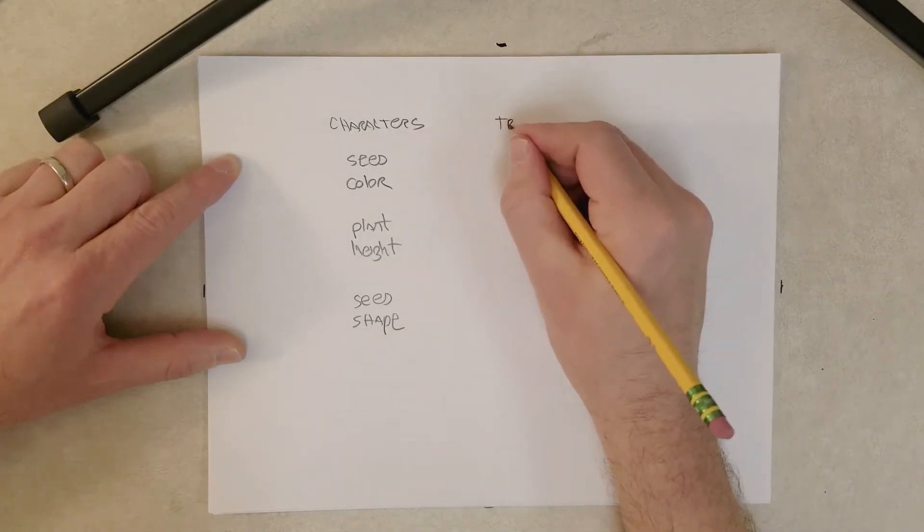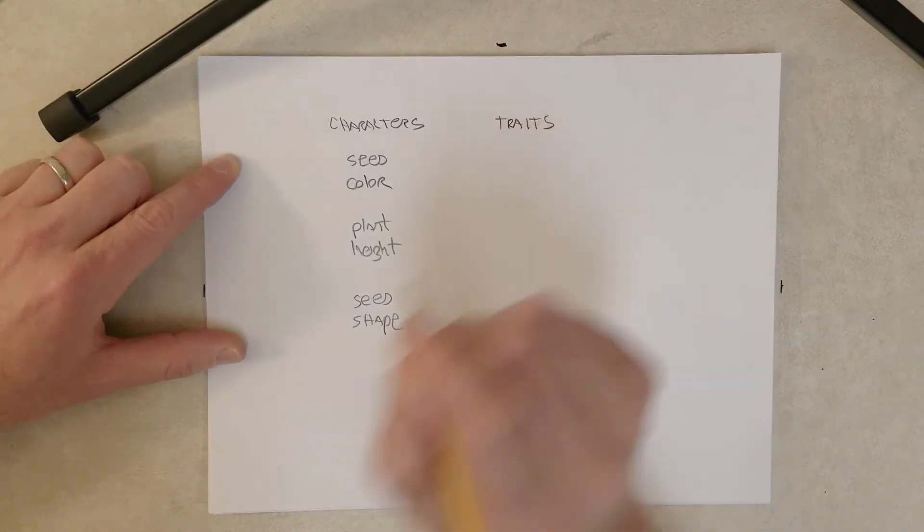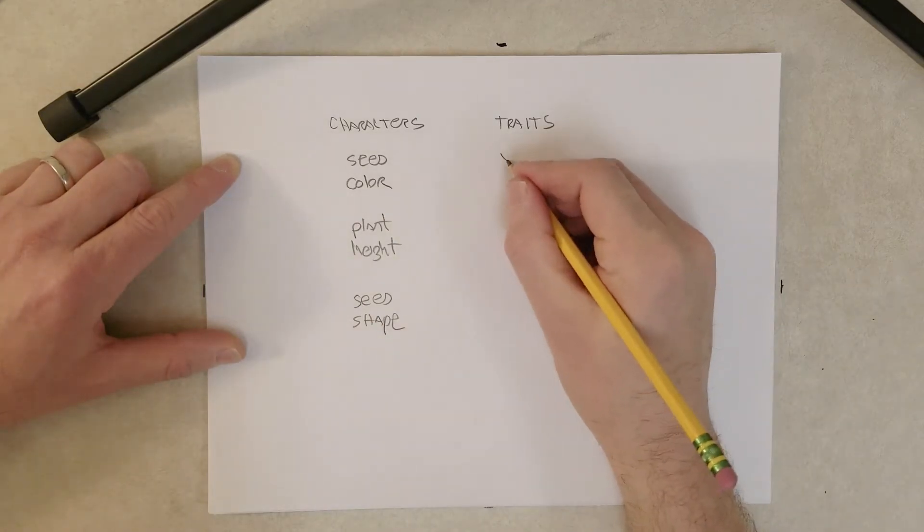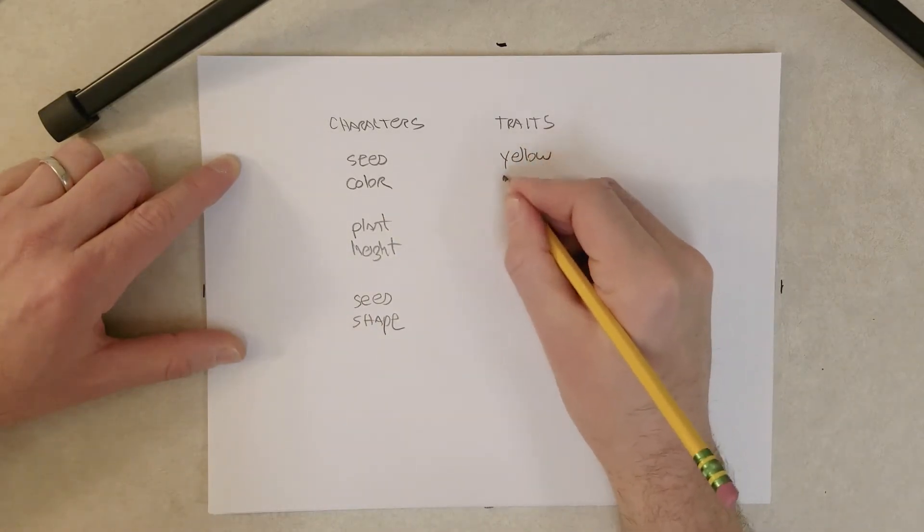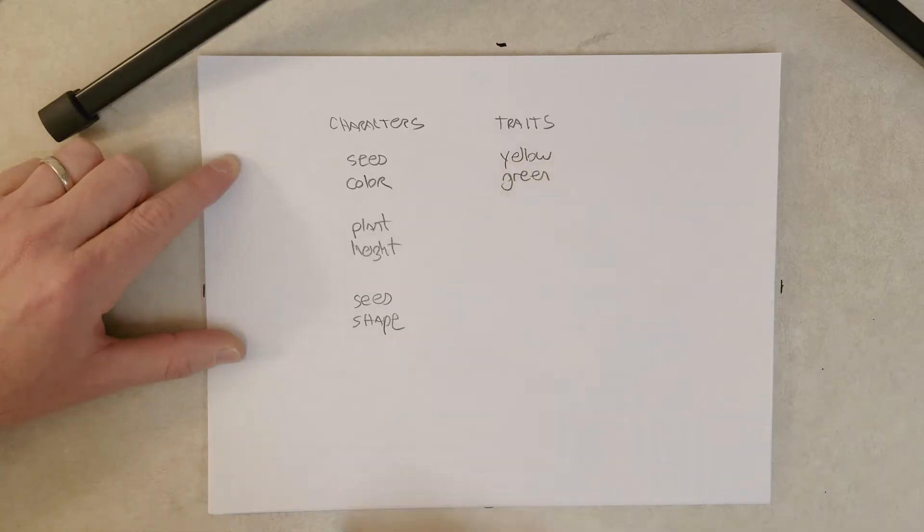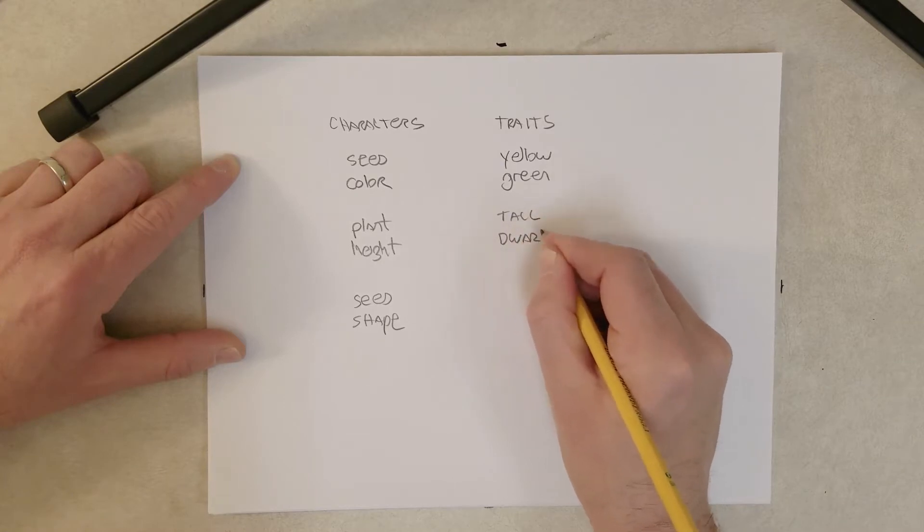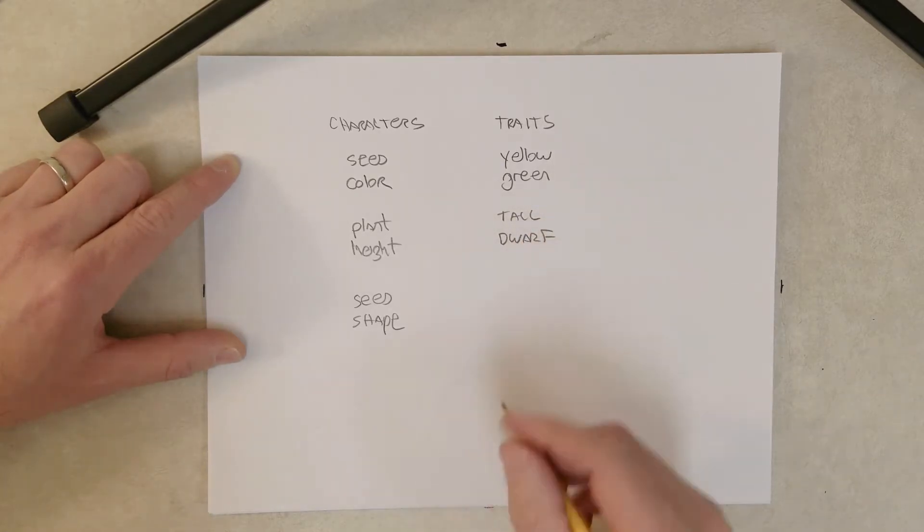And within these characters, he studied the clear and contrasting traits. So for seed color, we have yellow and green. For plant height, we have tall and dwarf. And for seed shape, we have round and wrinkled.